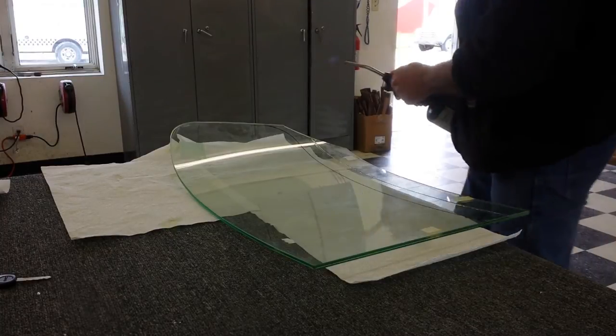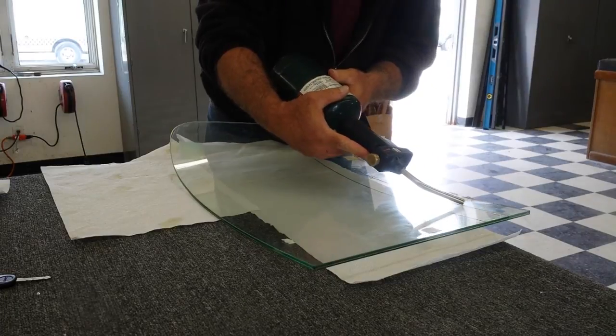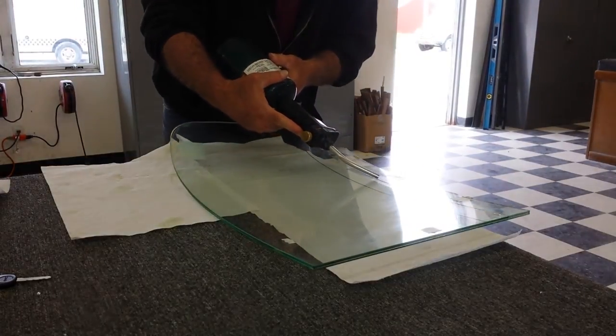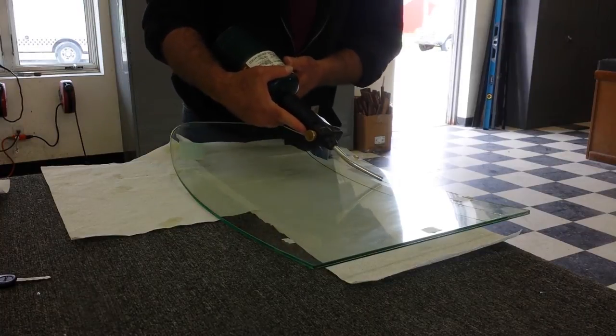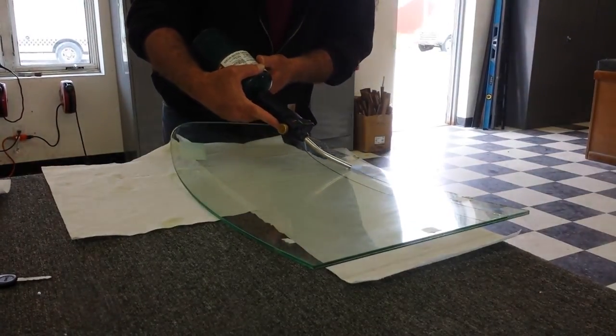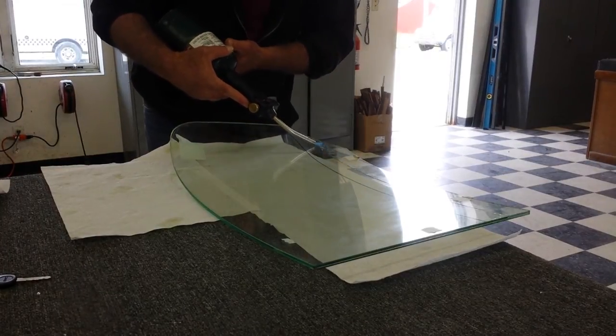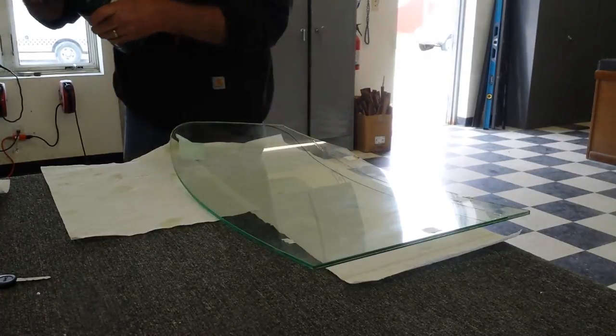We're going to warm this up just a little bit. We're going to get our piece that's coming off warm. We're not going to try to put any heat into the one we want to save. We want to just warm it up just enough to make that plastic nice and pliable. There we go.